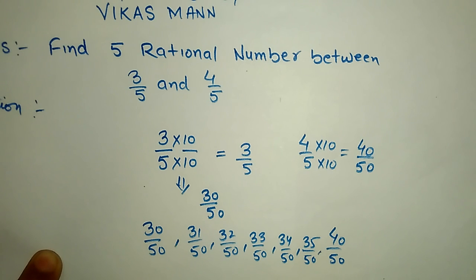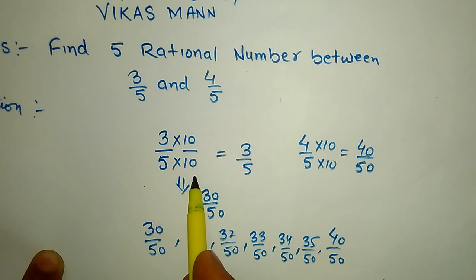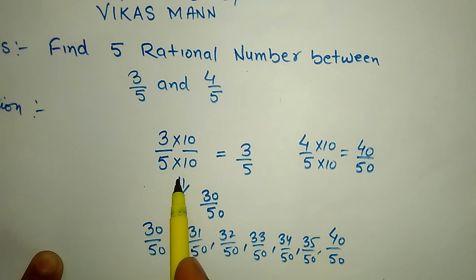We can find 99 numbers if we multiply and divide 3 by 5 with 100. And if we multiply 3 by 5, multiply with 1000 and divide it with 1000, we can get triple 9 numbers. It depends on your question and you, how many numbers you want to find between two rational numbers. For today, this is enough. Thank you.